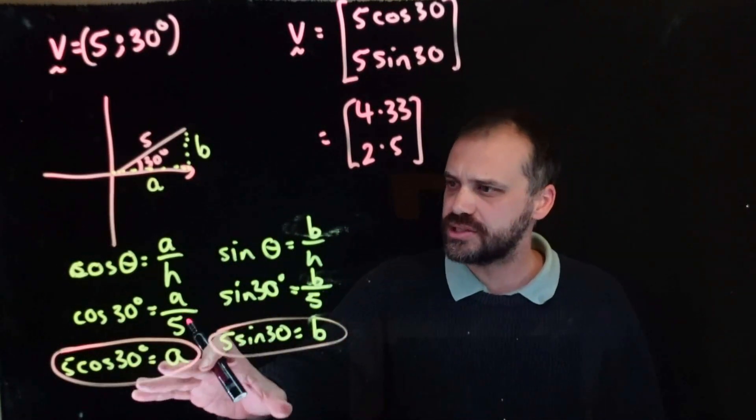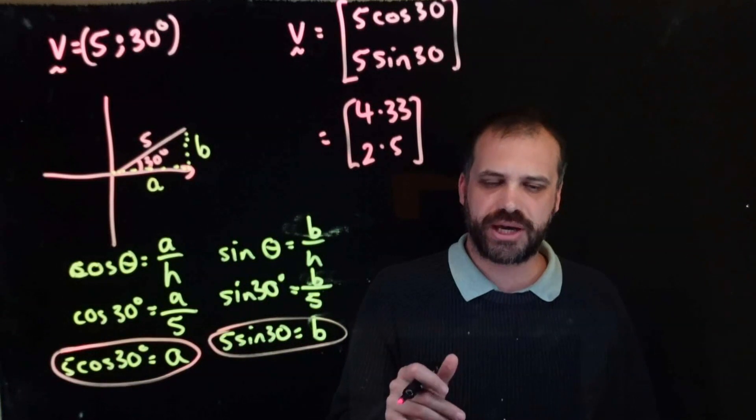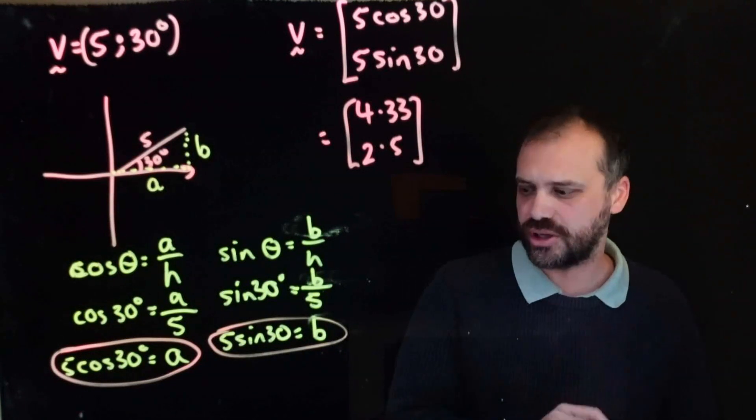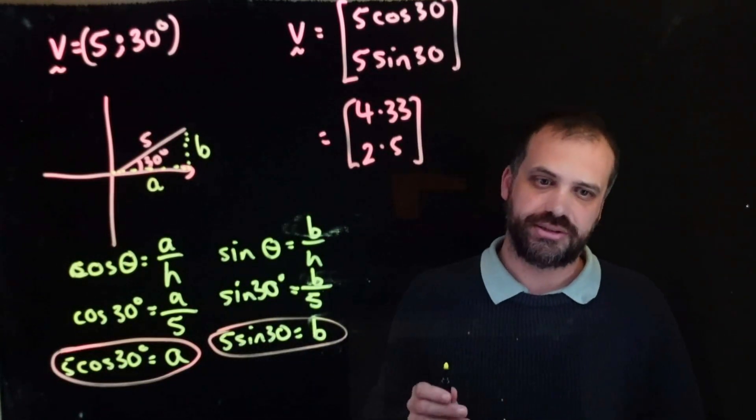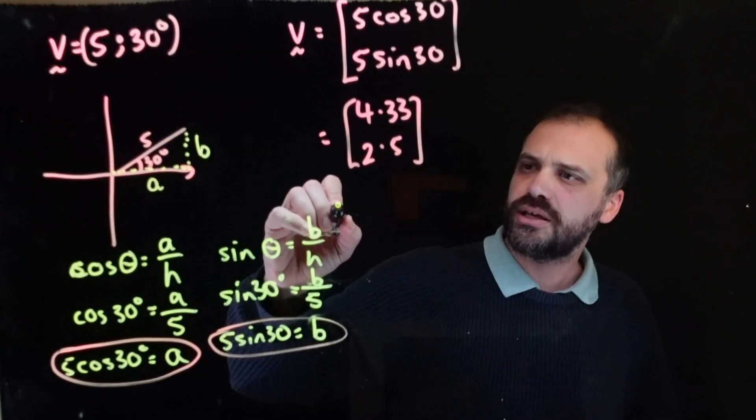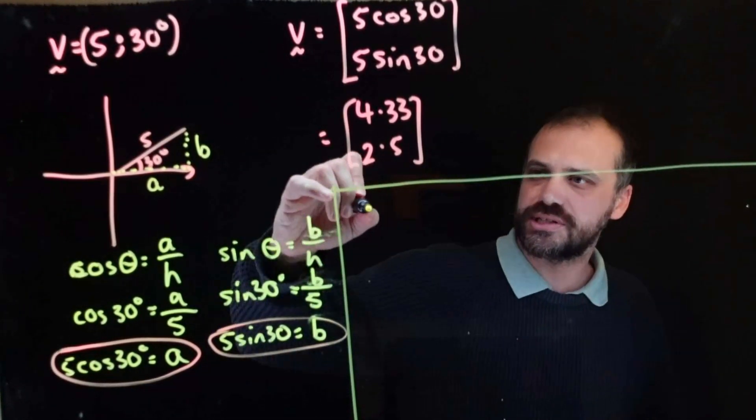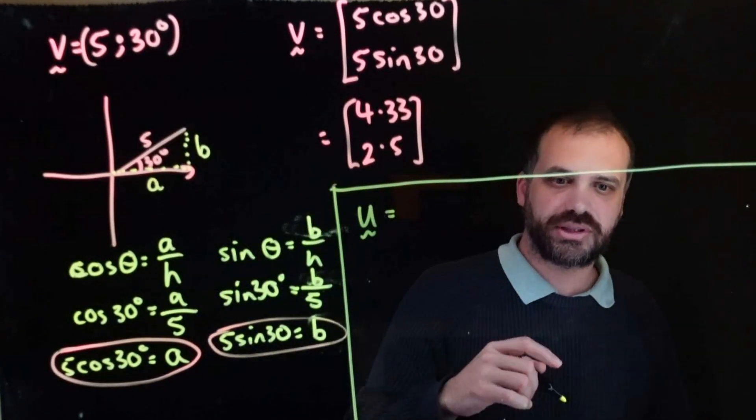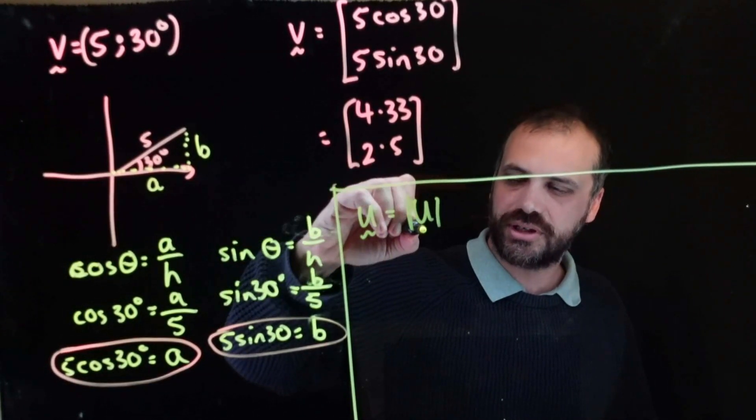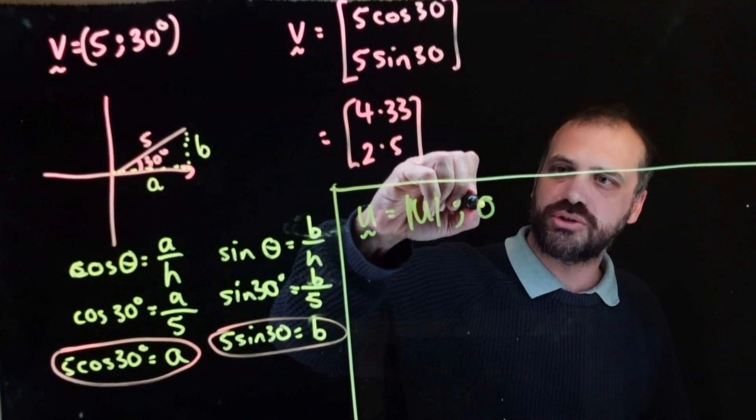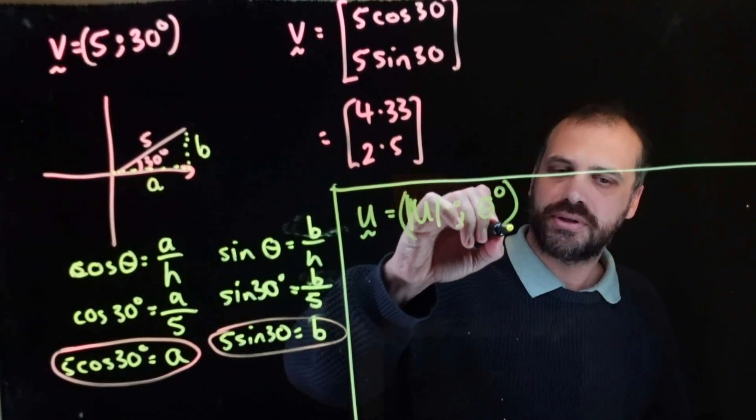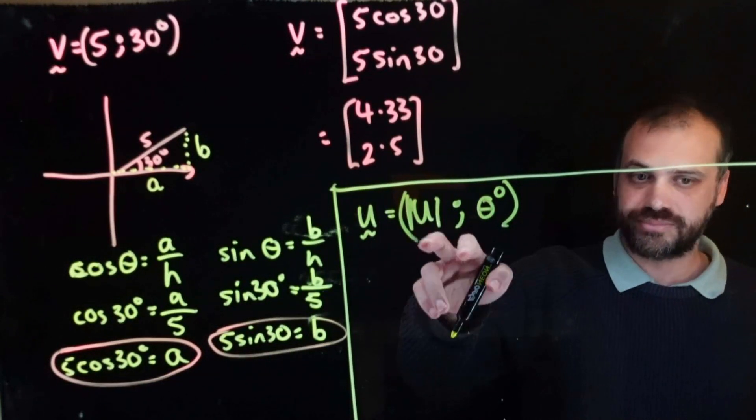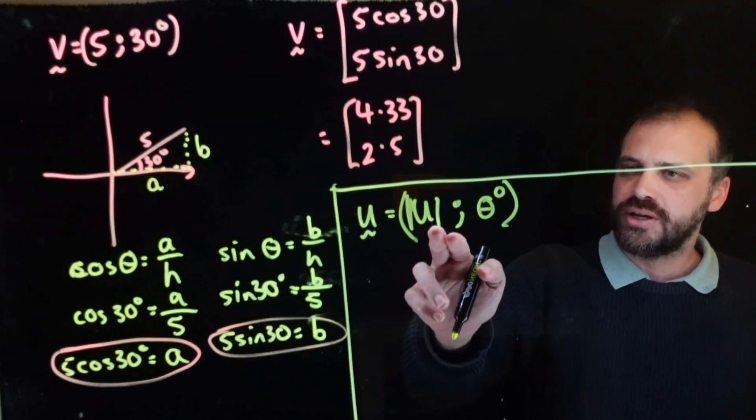I said this is important information. This is interesting information because now we can generalize this. And generalizing this makes our life really great. Because here's the general version of all of this stuff. Vector u is equal to, let's call it the magnitude of u, which is that. And then just call it angle theta. So, this represents every single vector ever created. It has a magnitude of itself, its own magnitude, and it has an angle theta.